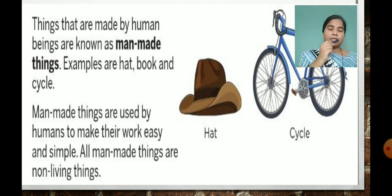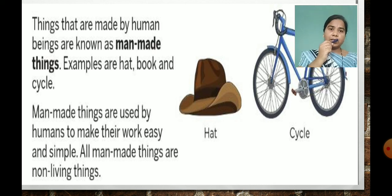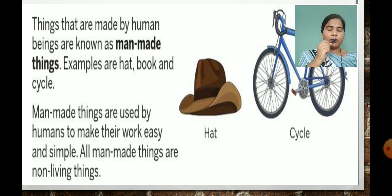All the things which are made by people or humans are non-living things — like hat, like cycle. These are man-made but they are non-living. In this way, we have seen this lesson. Read it properly, children, and go through it. Hope you got it very well.